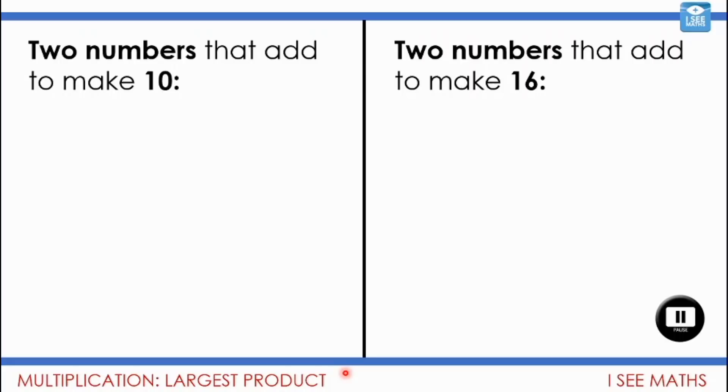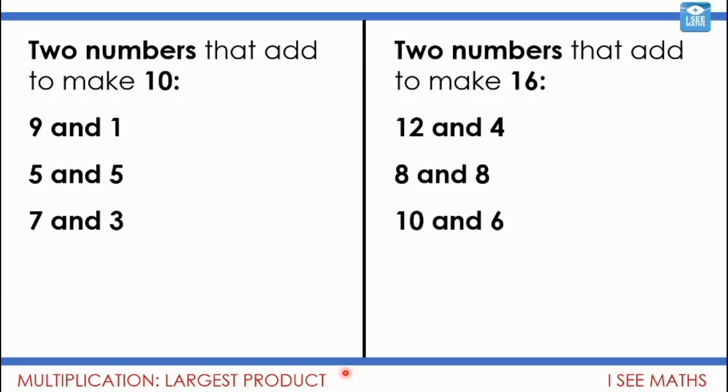So I hope you've got maybe three, even four combinations written down. If you haven't, pause the video and do that. If you have, you're ready to keep going. The examples that I'm going to provide could be, it could be that you've written down nine and one, or five and five, or seven and three for numbers that add to make ten. Or to make sixteen, twelve and four, eight and eight, ten and six are possibilities. Now what I want you to do next is this. I want you to pause the video, and whatever the numbers are that you have, I want you to multiply them together. And what do you notice? So for one of my examples, on two numbers that add to make ten, I would multiply seven and three. But I want you to multiply all your pairs of numbers. And what do you notice?